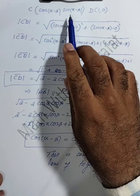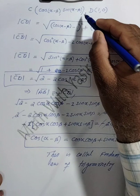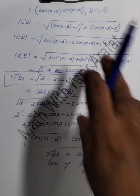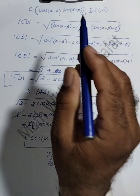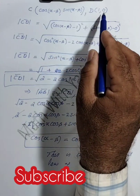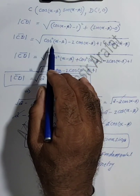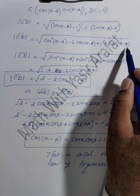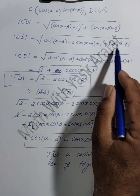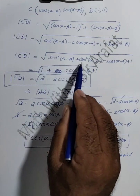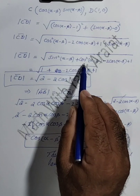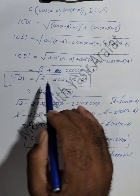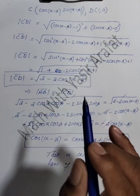Now finding CD using the distance formula: coordinates of C are (cos(α-β), sin(α-β)) and coordinates of D are (1, 0). Applying the distance formula: CD² = (cos(α-β) - 1)² + sin²(α-β). Expanding and using cos²(α-β) + sin²(α-β) = 1, we get CD² = 1 - 2cos(α-β) + 1 = 2 - 2cos(α-β).